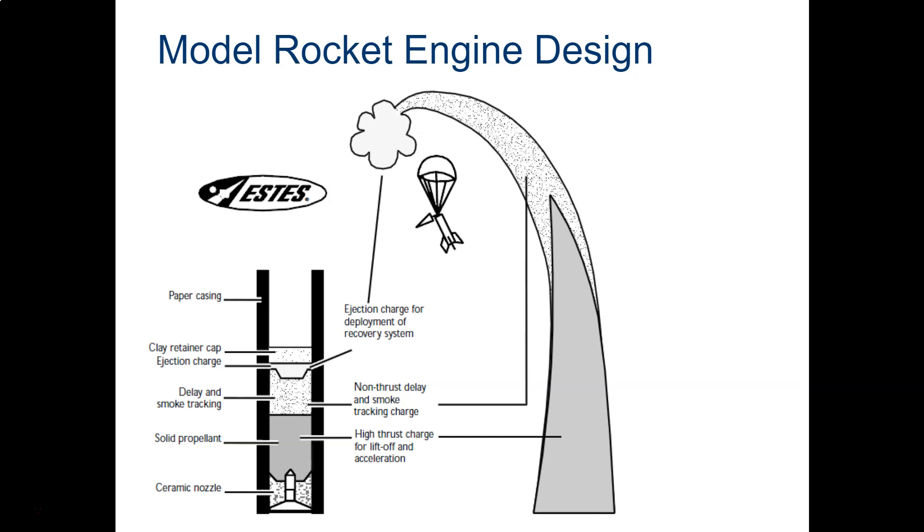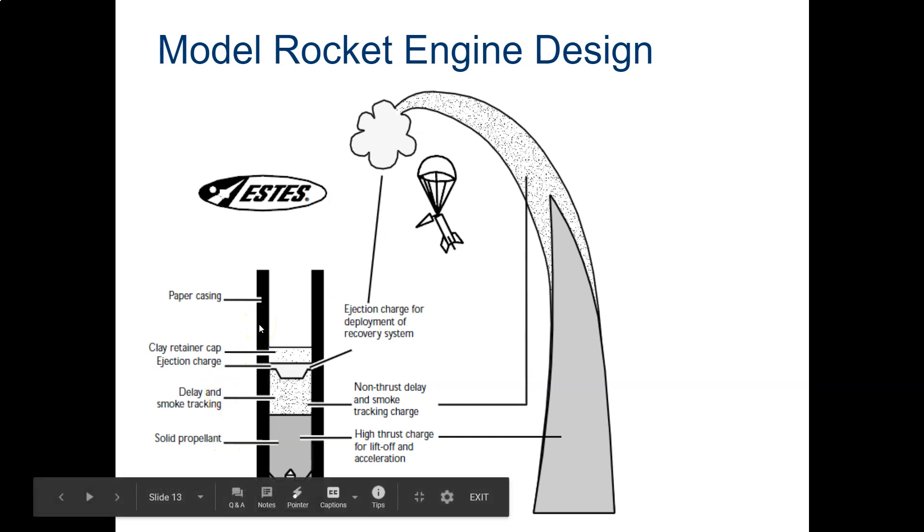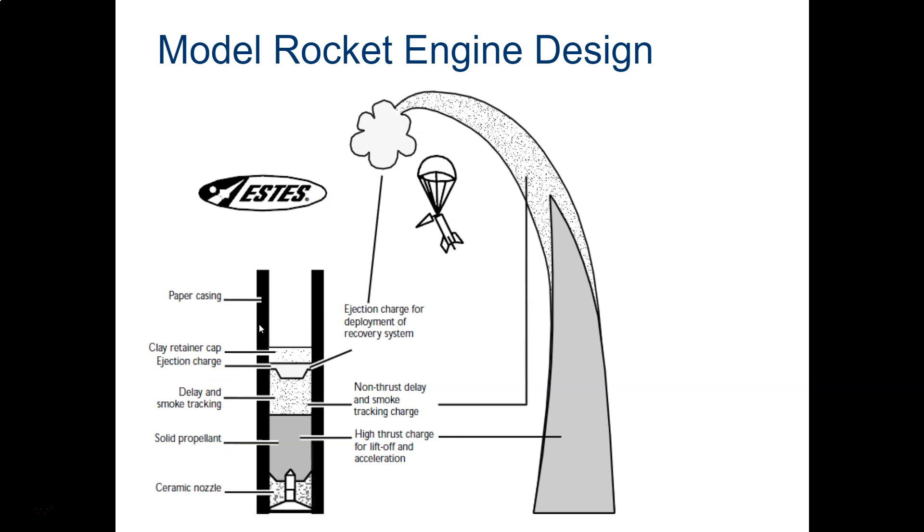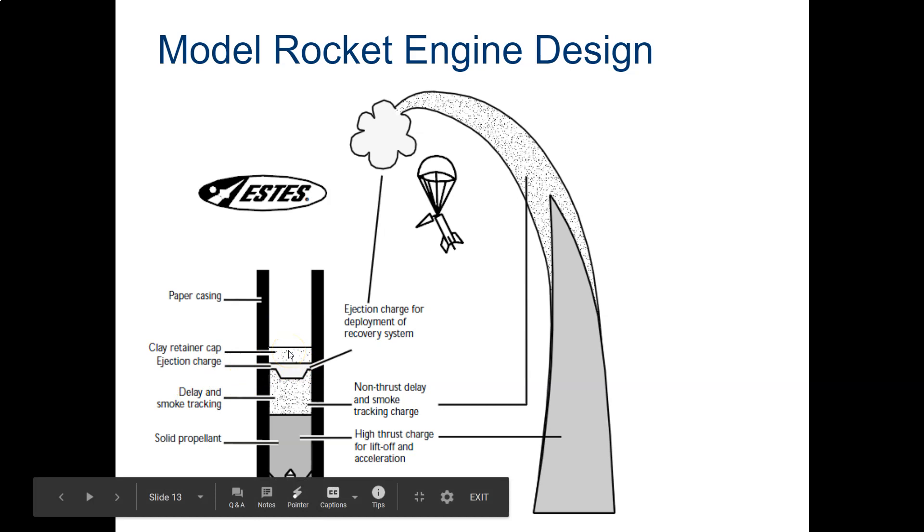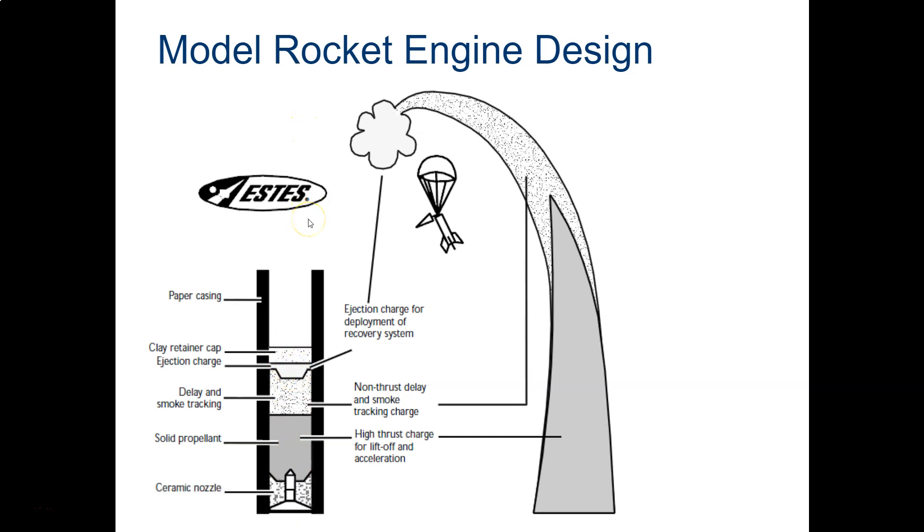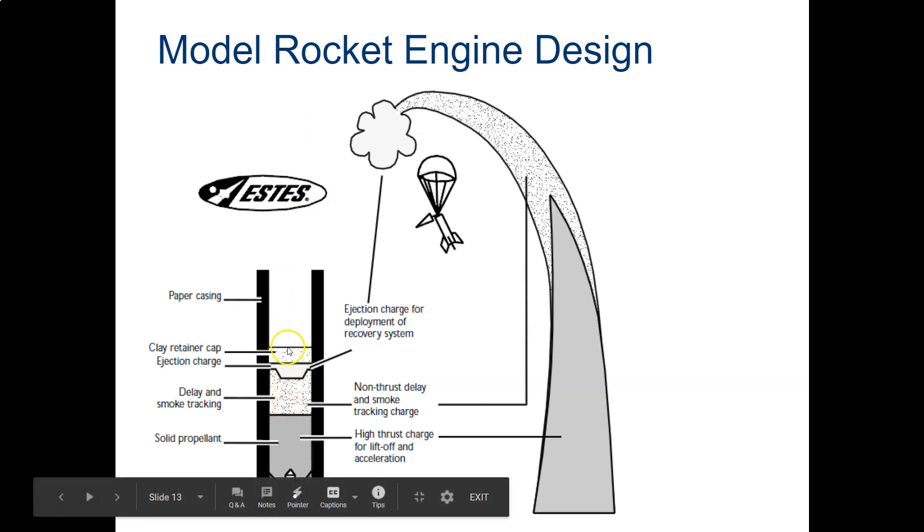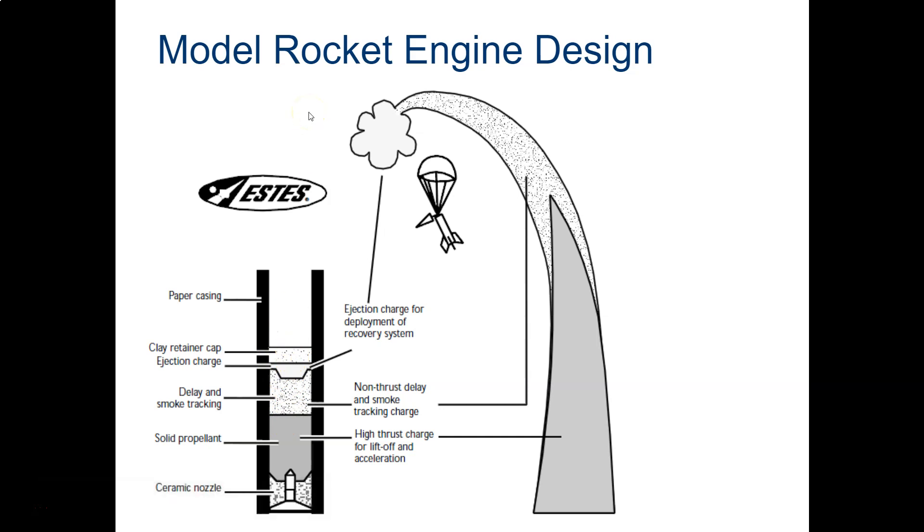This is what a cross-section of the model rocket engine looks like. It's a solid propellant. If we cut it in half and took a look at it, this is what it would look like. Down at the bottom you see the nozzle and it expands just like we would expect. It has a solid propellant and then it has a delay in it, and then at the top here it has a little explosive charge. That is a propellant but instead of blowing down or out it actually blows up. So what happens is when the flame reaches this part, when this burns through, this part burns and it ejects the parachute. Here's just a demonstration of what that looks like.